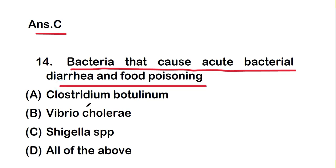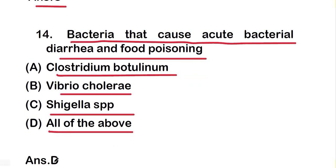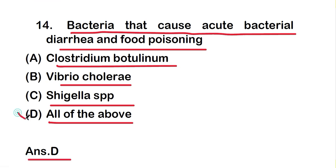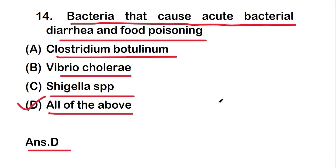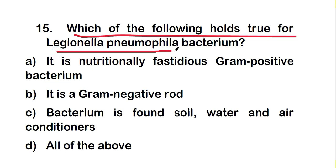The next question is: which bacteria cause acute bacterial diarrhea and food poisoning? The options are Clostridium botulinum, Vibrio cholerae, Shigella species, or all of the above. The right answer is option D — all of the above — so Clostridium botulinum, Vibrio cholerae, and Shigella species all cause acute bacterial diarrhea and food poisoning.